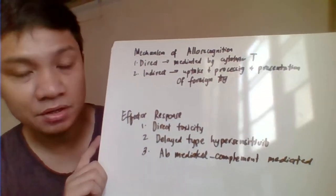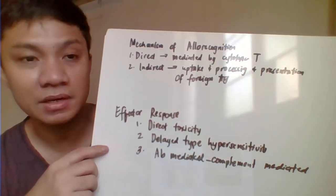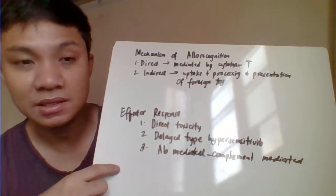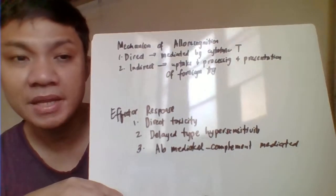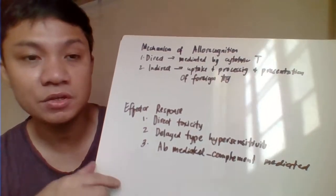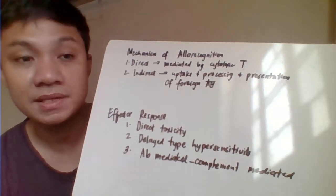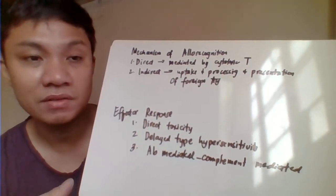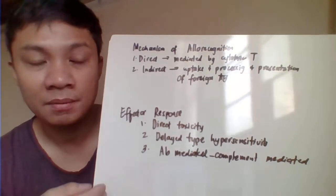The mechanism of rejection involves allo recognition — the ability of our immune system to recognize something as foreign, leading to the rejection process. The first pathway is direct allo recognition, where the transplanted tissue is detected and acted upon directly by cytotoxic T cells. The second is indirect allo recognition, where the graft is rejected through antigen processing and presentation, starting with recognition of the foreign antigen, then phagocytosis, then presentation to cytotoxic T cells or T helper cells, leading to rejection.